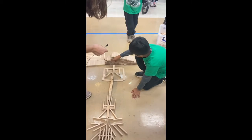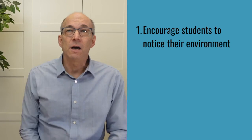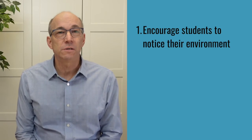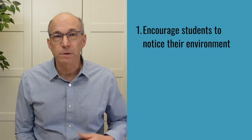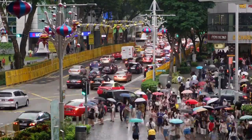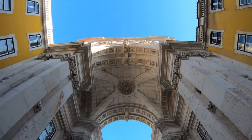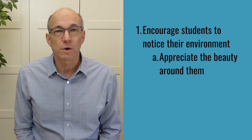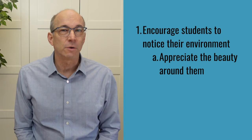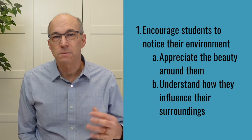Doing this sort of communication in a non-threatening, simple, short way is a way to get students building the ability and skill to verbalize their thought processes. This lesson encourages students to notice the built environment around them. Oftentimes we walk by these buildings and things around us and just take them for granted, and by slowing down it helps us appreciate the beauty that's around us and the thought that went into it.